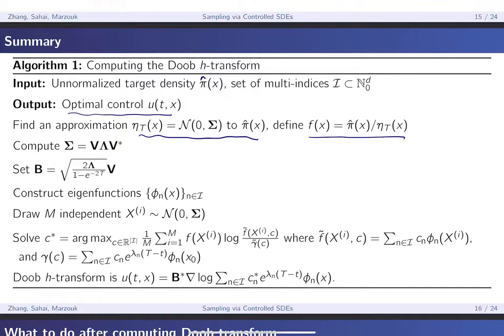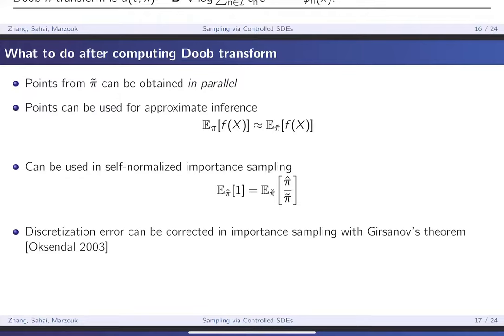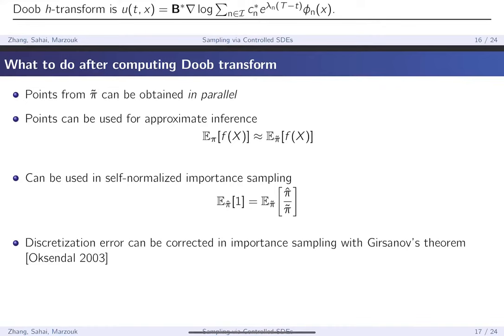After computing the controller, you can generate points from the approximate density π̃ in parallel — unlike MCMC, which is fundamentally sequential, these samples are embarrassingly parallel. After getting the samples, you can use them for approximate inference: if you're satisfied that π̃ is a good enough approximation to π, you can estimate expectations directly. Another approach is self-normalized importance sampling, using π̃ as an importance sampling distribution for π. Since we don't have the normalization constant of π, self-normalized importance sampling estimates the normalization constant simultaneously.